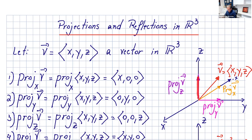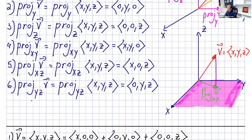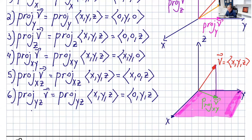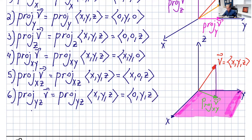The projection of v onto the z-axis is the z component of the vector, written as (0, 0, z). You can also project v onto the xy plane. If this is our xy plane — the horizontal one — you take that vector and project it here, so that's the projection of v onto the xy plane.